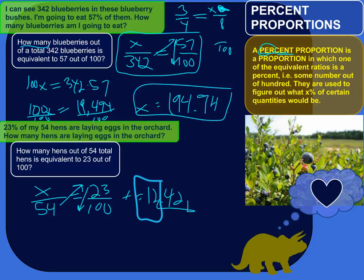Another little shortcut here on the side. 23% in decimal form is 0.23. So I could actually do 0.23 times 54. 23% of, of usually means multiply. So 23% of 54 is 0.23 times 54. And you'll get 12.42.